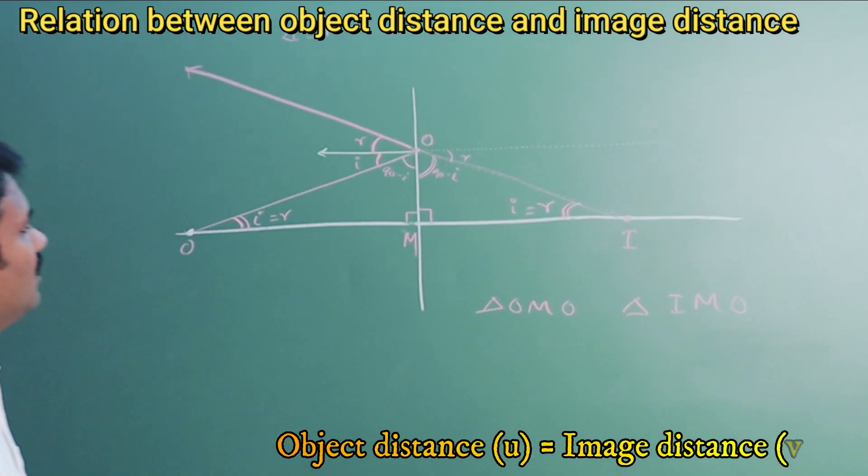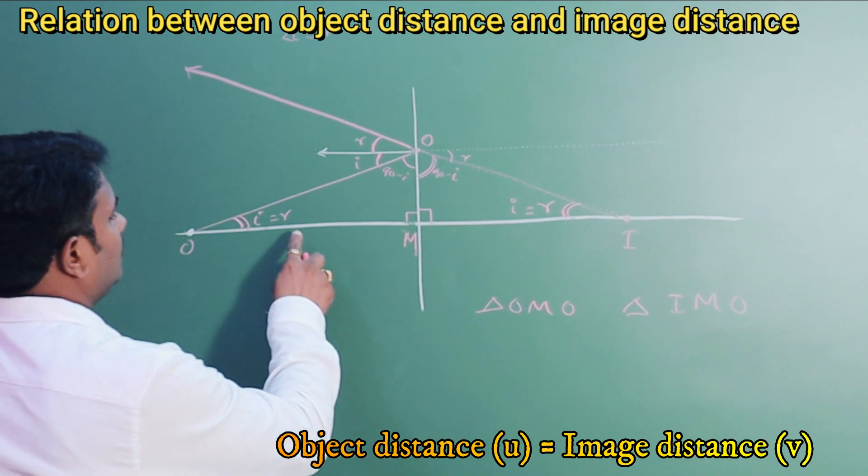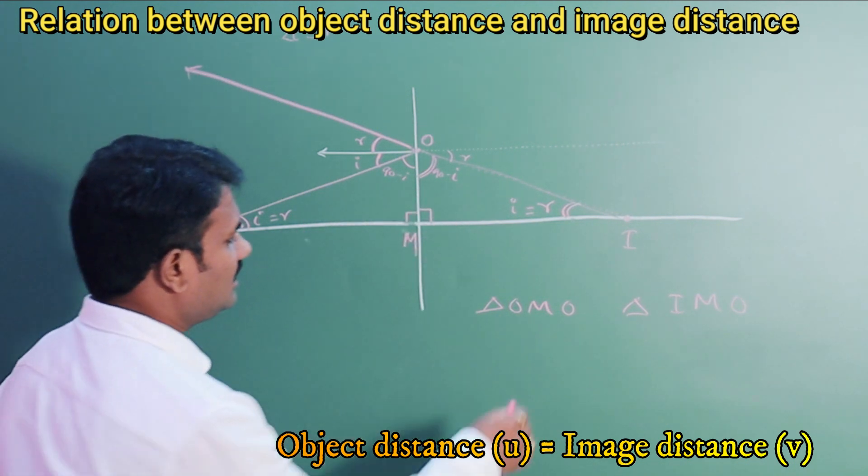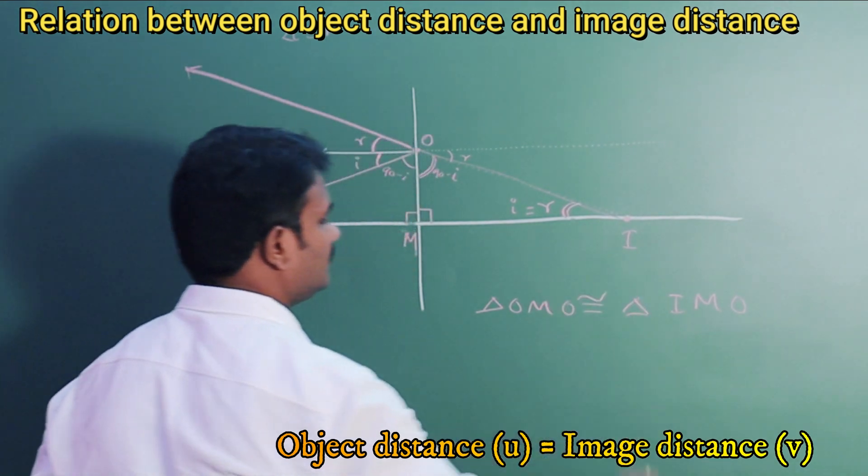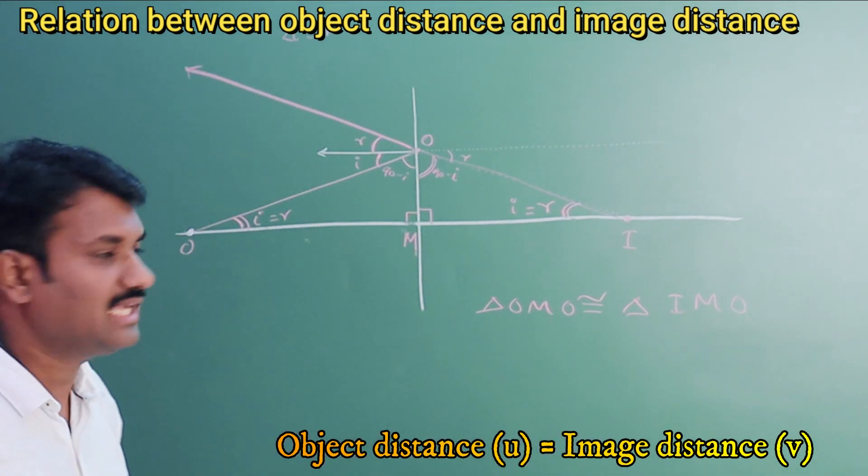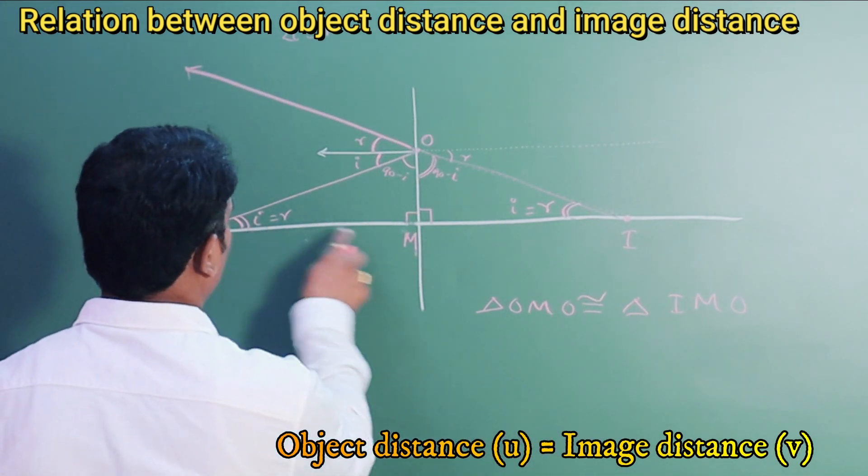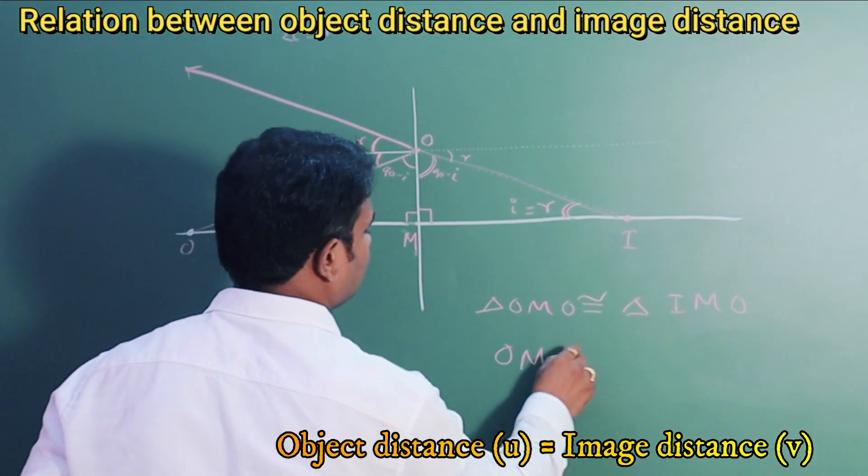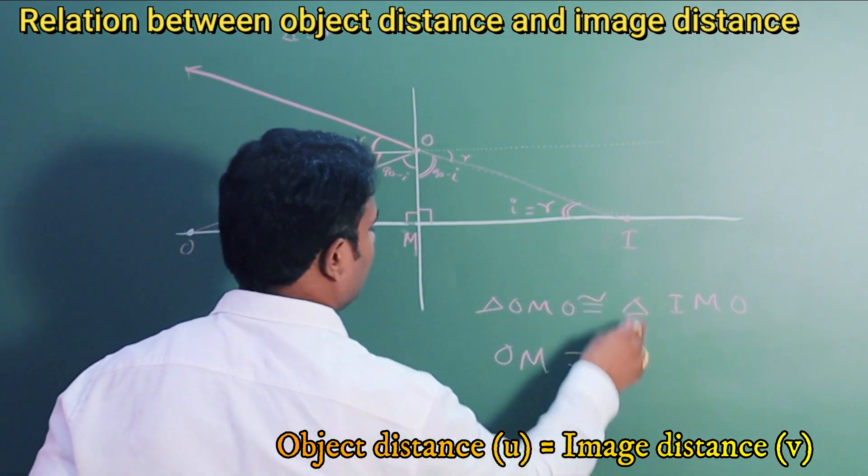And this side is common for the two triangles. So now we can say that these two are congruent triangles. As these two are congruent triangles, the side O, M must be equal to side M, I.